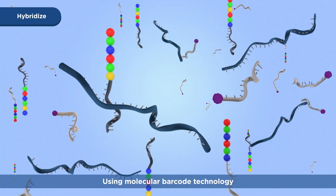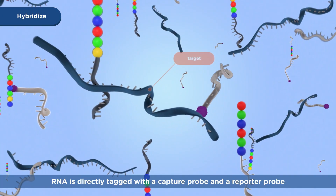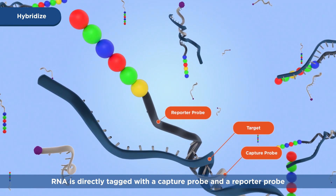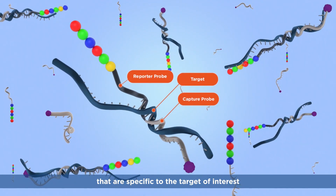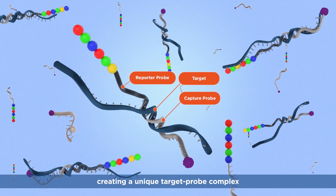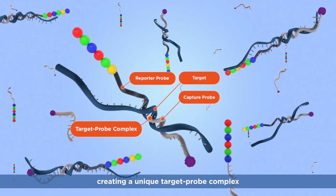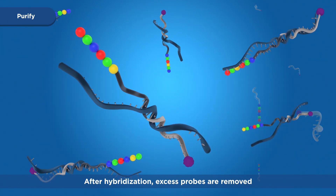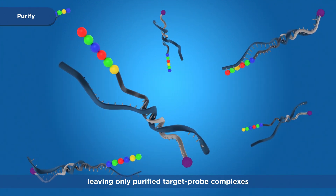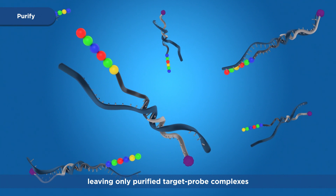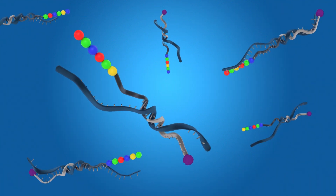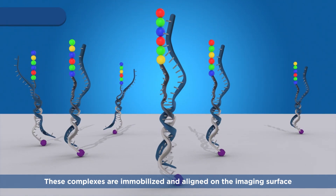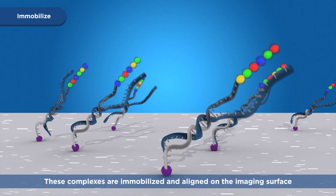Using molecular barcode technology, RNA is directly tagged with a capture probe and a reporter probe that are specific to the target of interest, creating a unique target probe complex. After hybridization, excess probes are removed, leaving only purified target probe complexes.